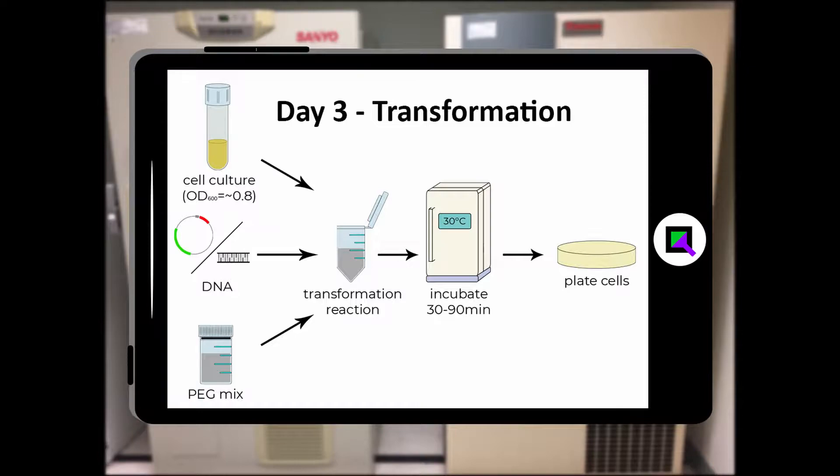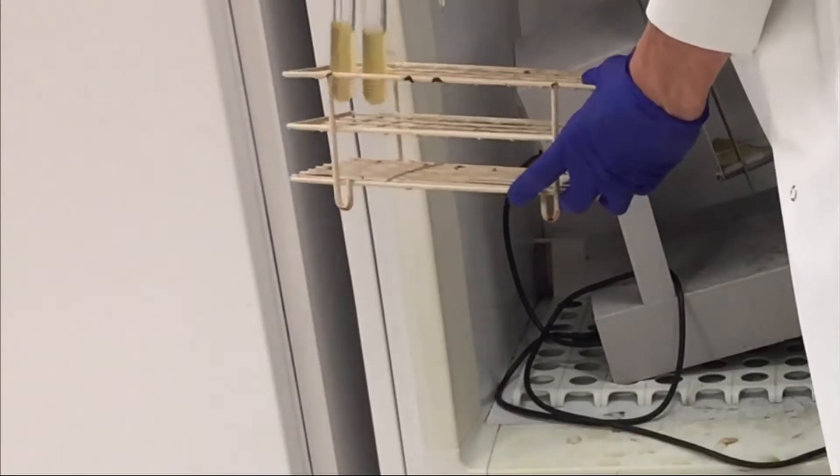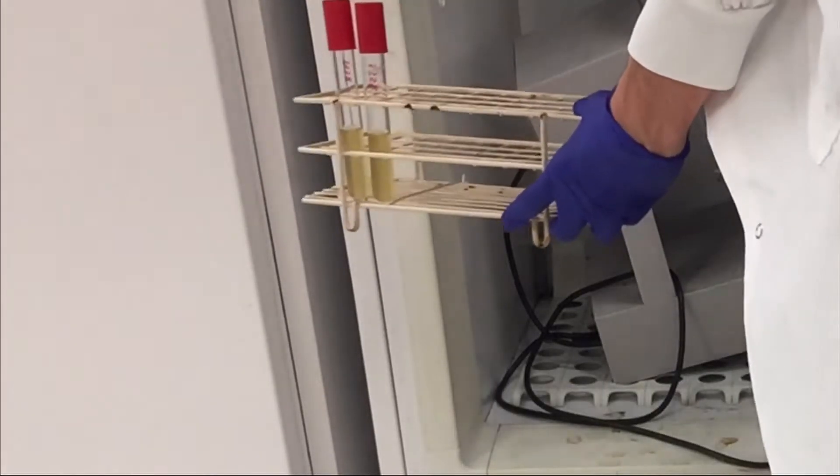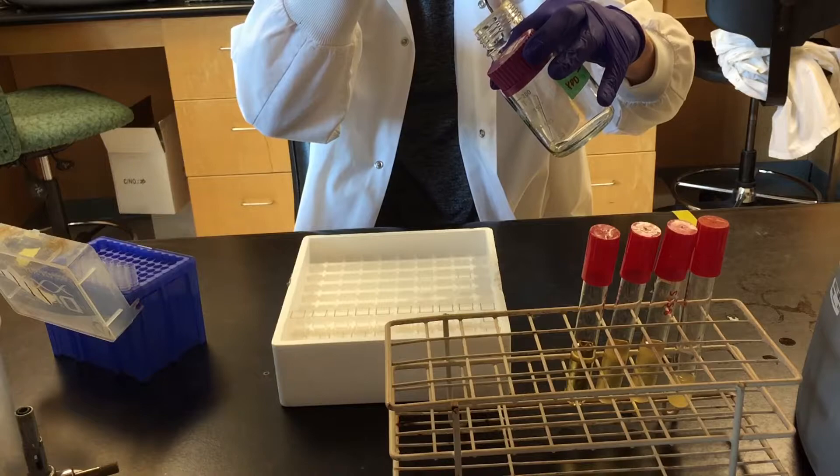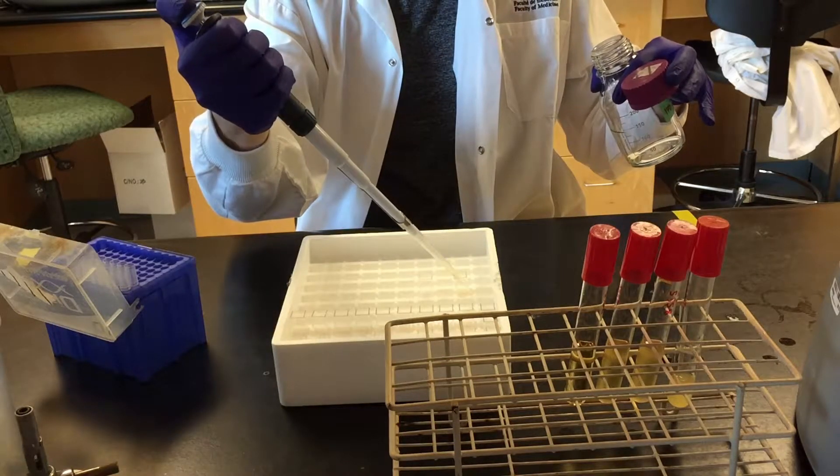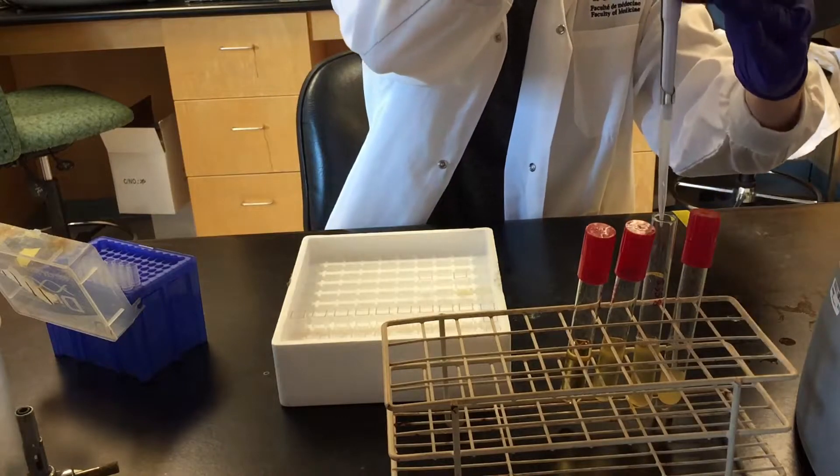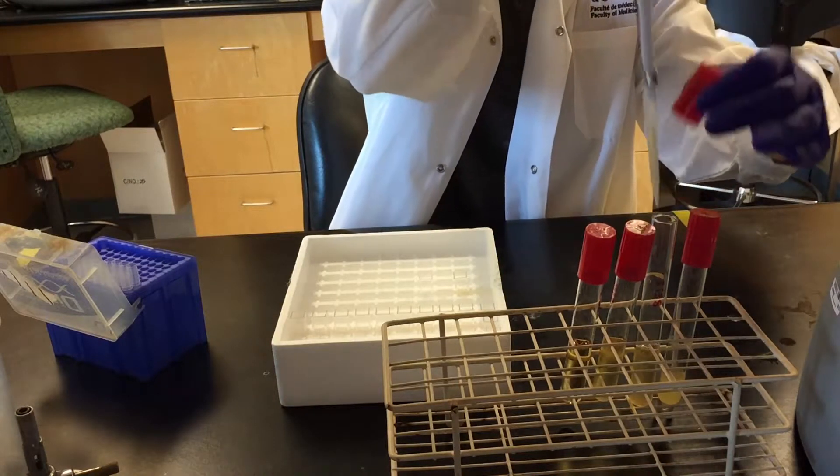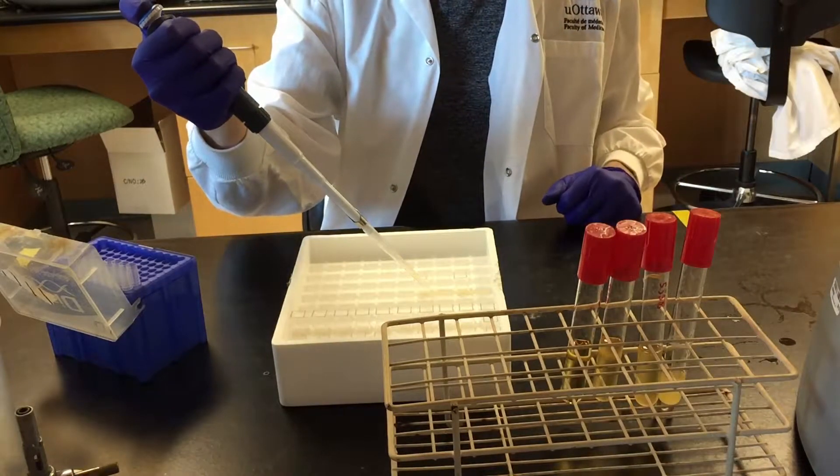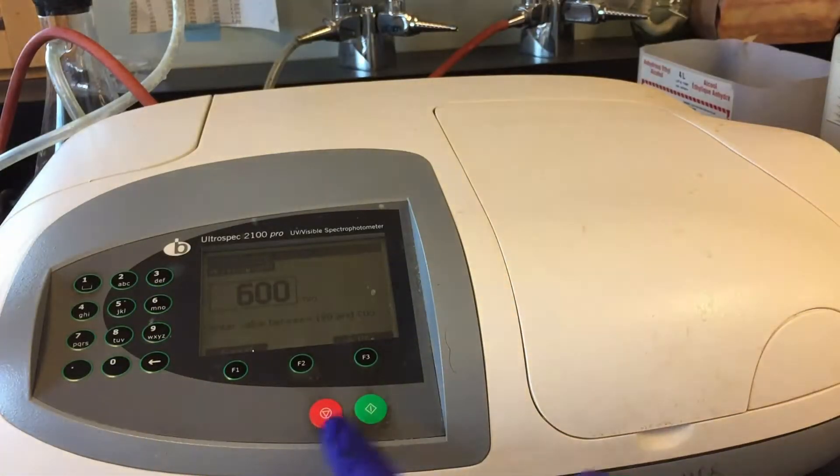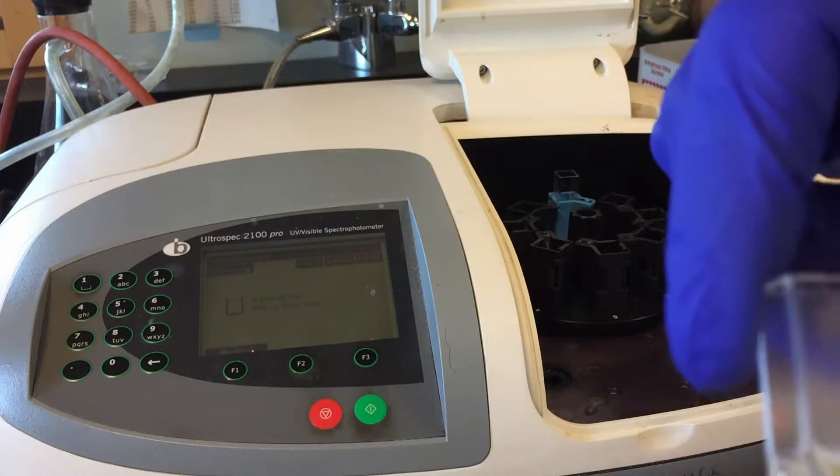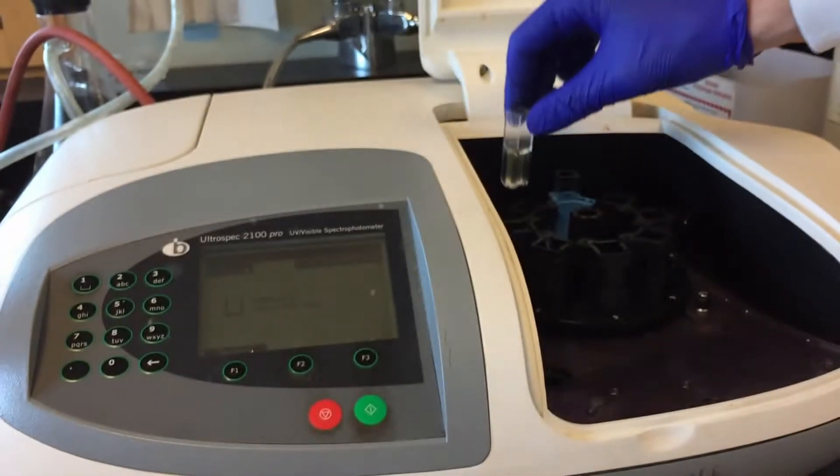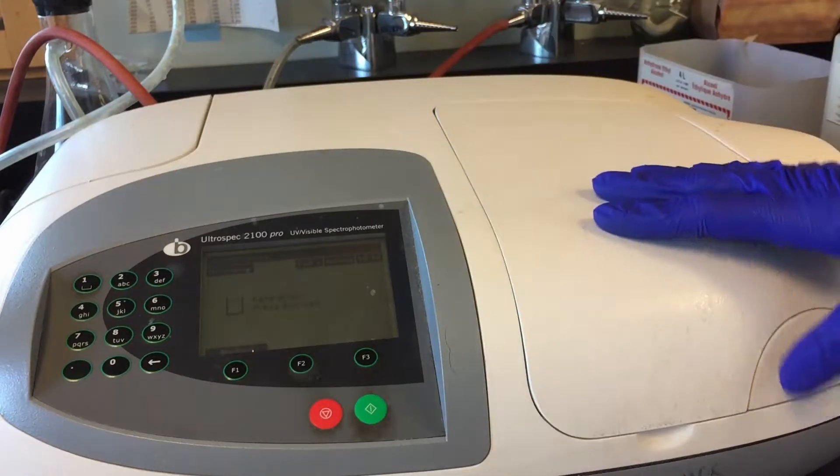Day three, transformation. Take the liquid cultures out of the incubator. Measure the OD of cultures that are not obviously saturated. An OD 600 value of 0.6 to 0.8 is ideal for exponentially growing cultures.